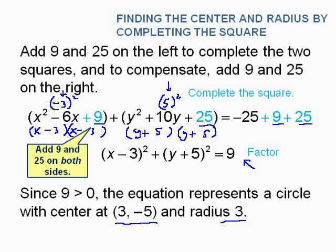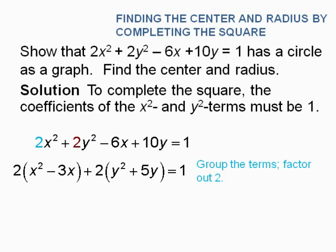Since 9 is greater than 0, we have a circle. Had this number come out to be 0, we would have had just the point (3, negative 5). Had it been negative, we wouldn't have had any graph at all.